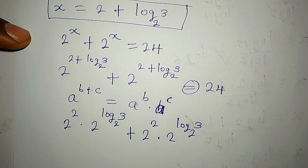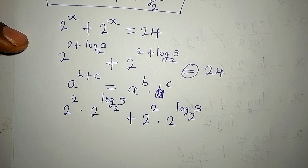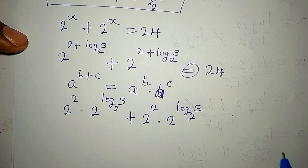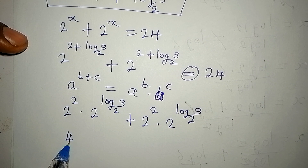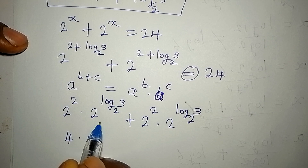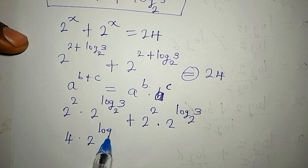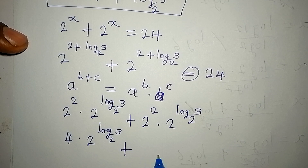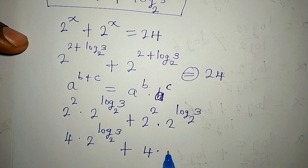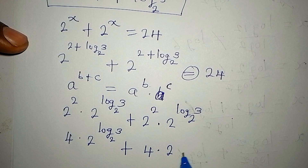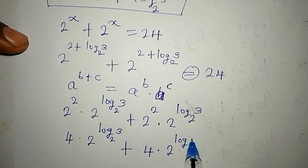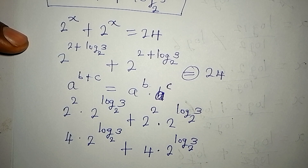This gives us 4 times 2 to the power of log 3 to base 2, plus 4 times 2 to the power of log 3 to base 2. Let's see if this gives us 24 at the end of the day.